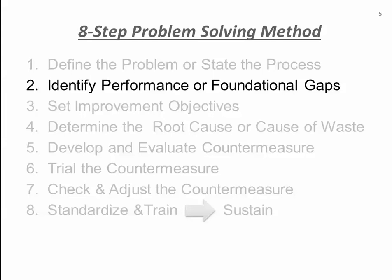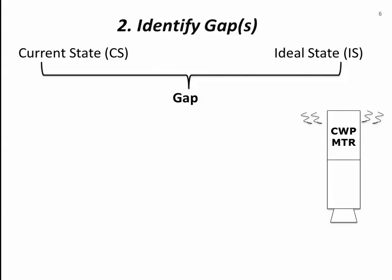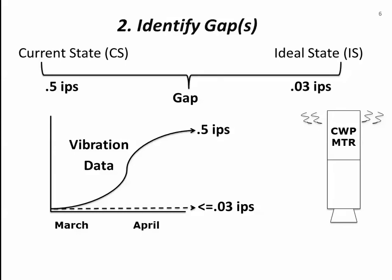The next step is to identify performance or foundational gaps. In order to determine our gaps, we need to identify our current state and our ideal state — then the difference will be our gaps. For the CERC water pump motor, we want to know how bad the vibration is. Looking at the vibration data trend, we see that the amplitude trend started increasing in March and is currently at .5 inches per second. Ideally, the amplitude should be less than or equal to .03 inches per second, giving us a gap of .47 inches per second.